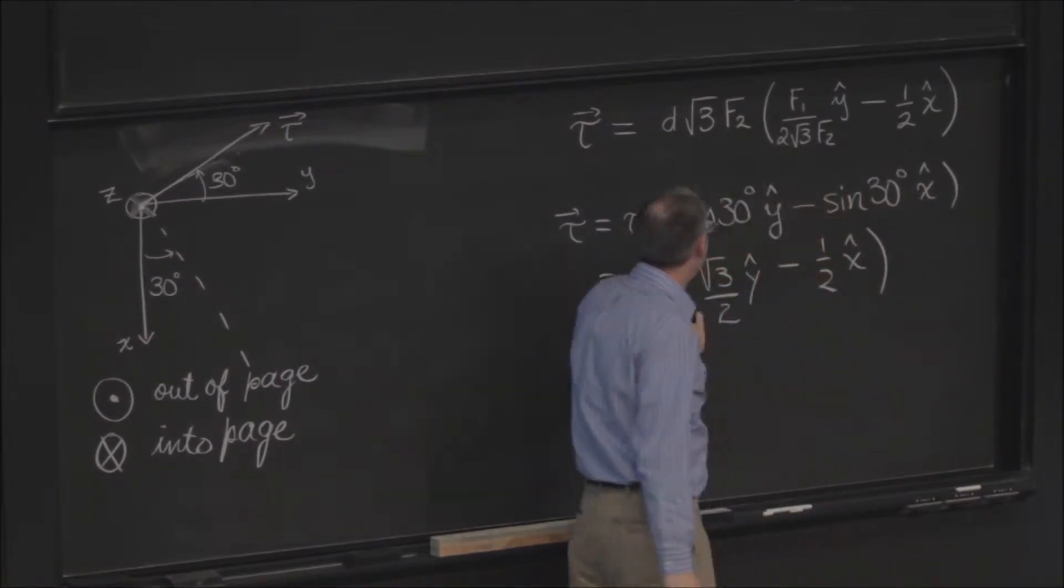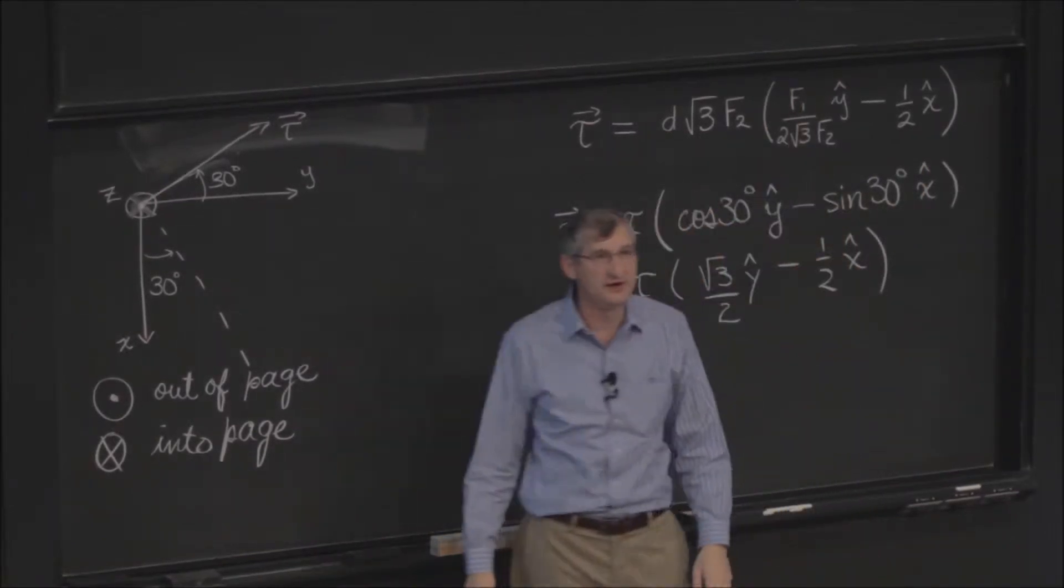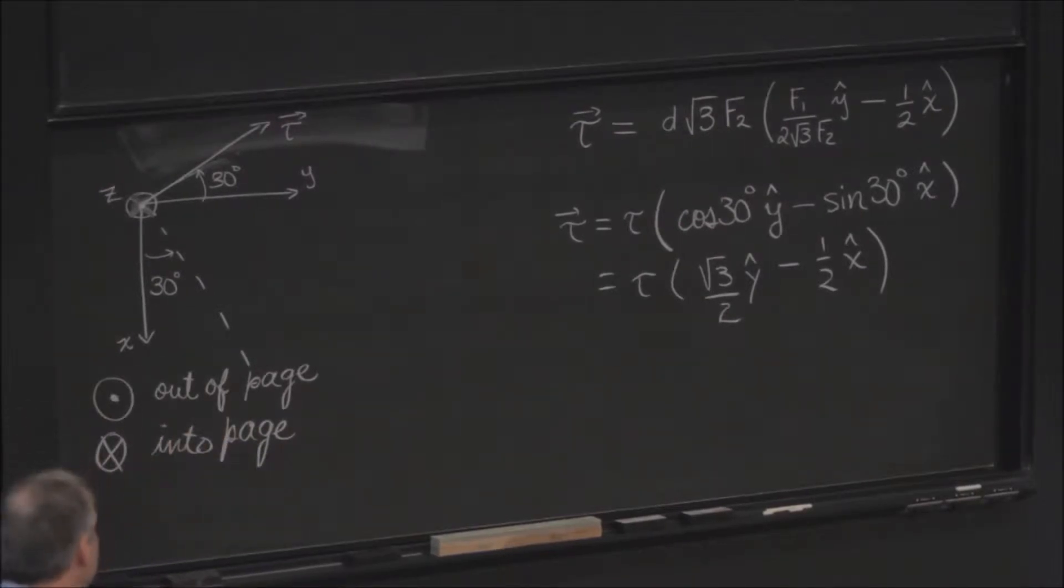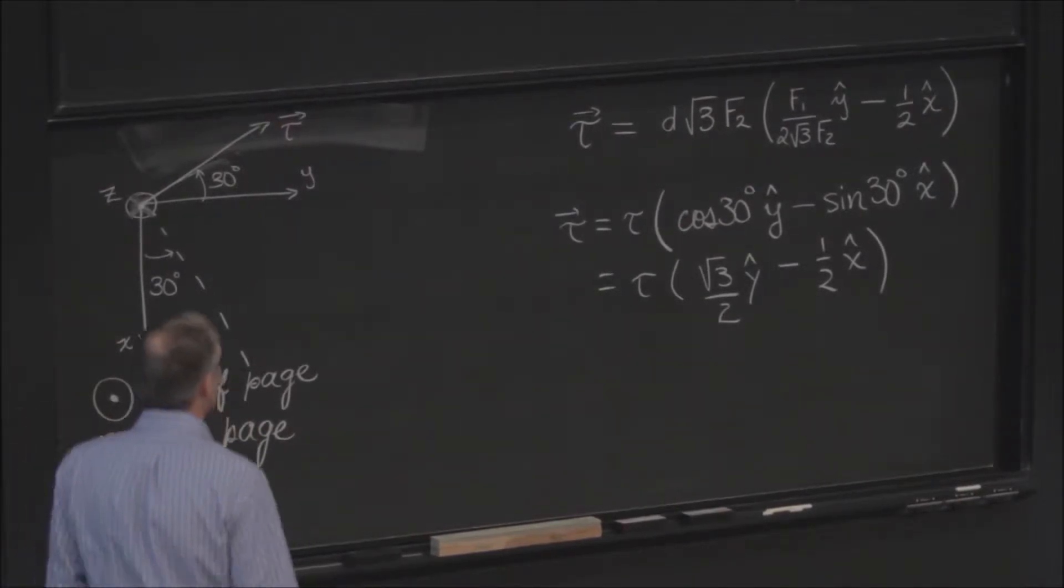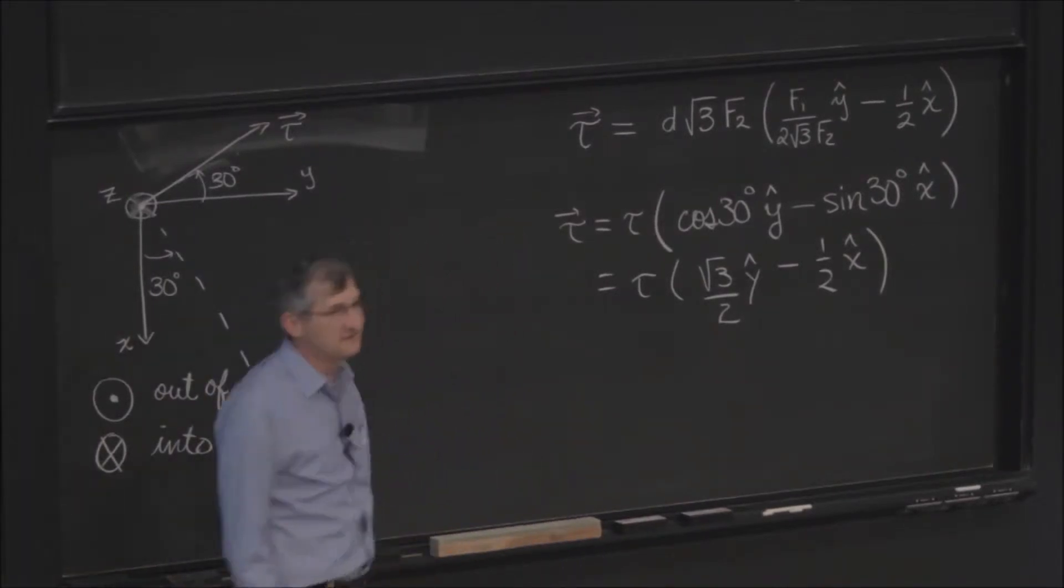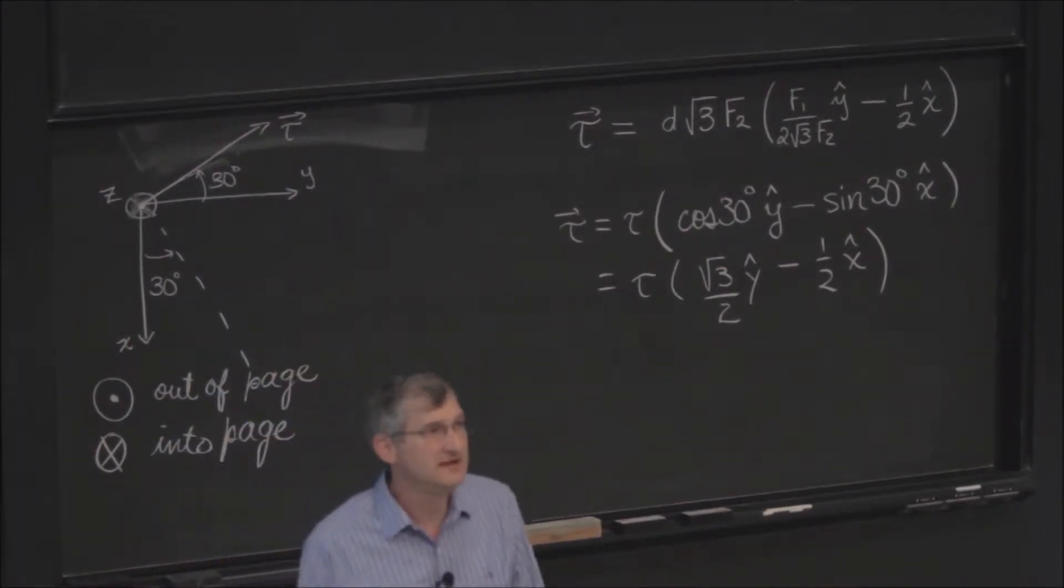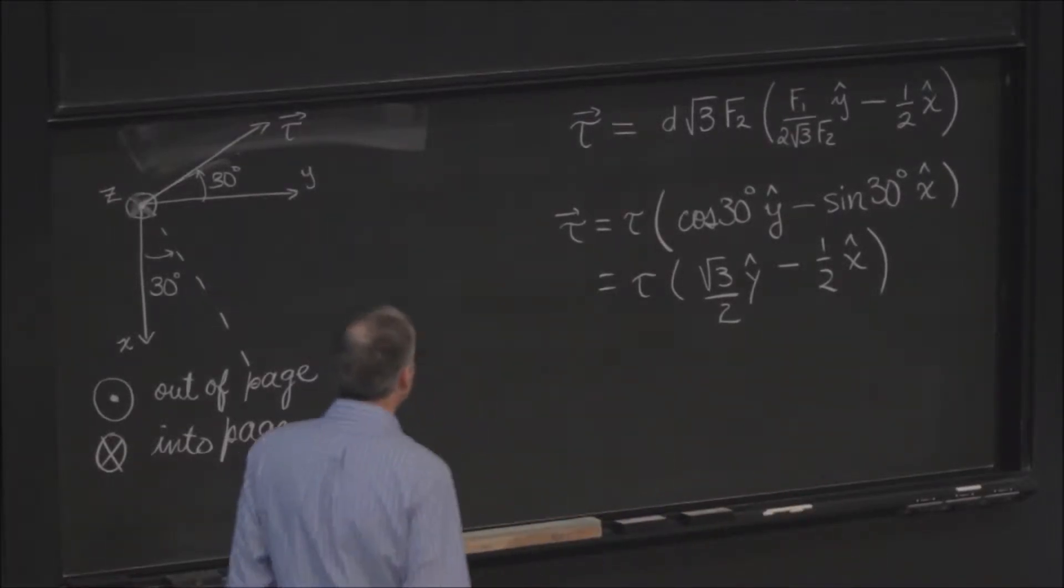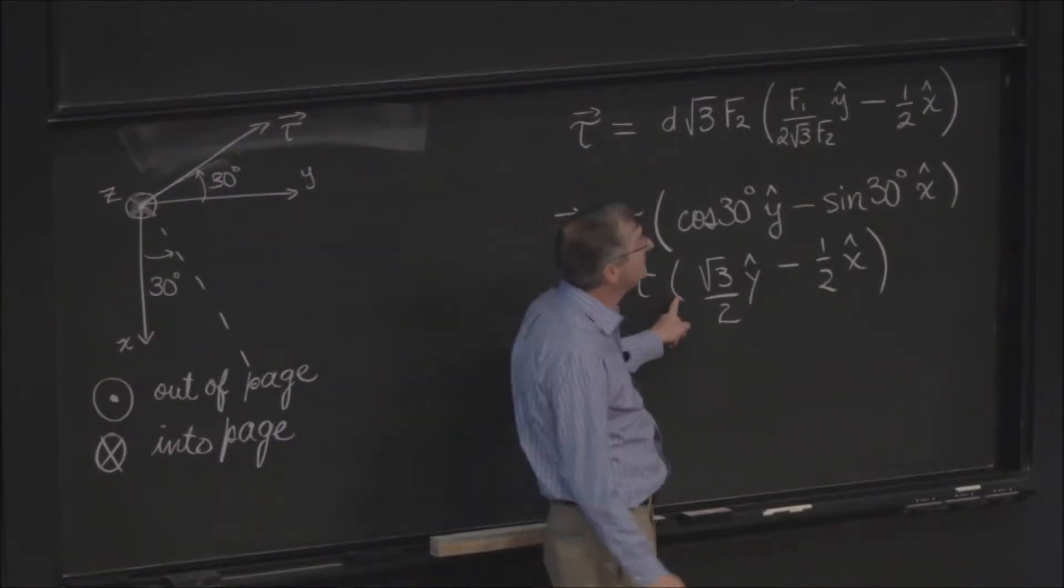So I therefore need to pick the ratio f1 over f2, so that I get the right component in the y direction. And I have a root 3 in the bottom, so I need a root 3 in the top. I'm going to have to multiply by 3.